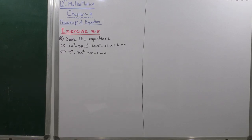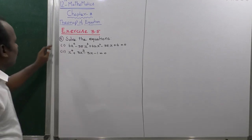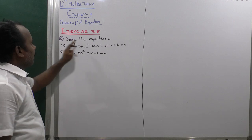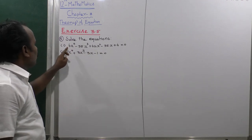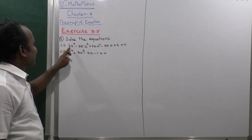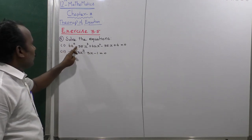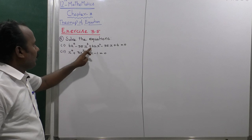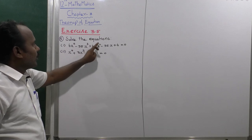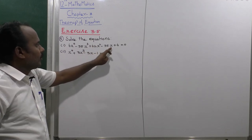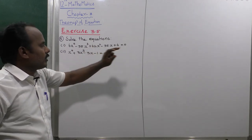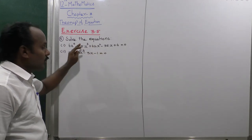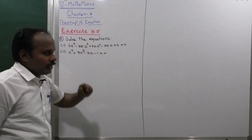X is 3.5, fifth sum — solve the equations. The first one: 6x⁴ minus 35x³ plus 62x² minus 35x plus 6 is equal to 0. This is the first equation.